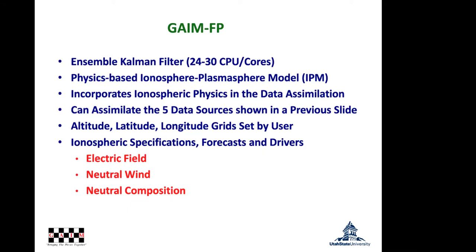The GAME Full Physics model is an ensemble Kalman filter. The background physics-based model is the Ionosphere-Plasmosphere Model (IPM). At every time step, 24 to 30 IPM simulations are launched, each with different drivers — different electric field, neutral wind, and neutral composition patterns. The assimilated data determine which of the 24 to 30 IPM runs is the best, and this process repeats until data, model, and drivers are in agreement. GAME Full Physics can assimilate five different data sources, and the output includes ionospheric specifications, forecasts, and drivers.